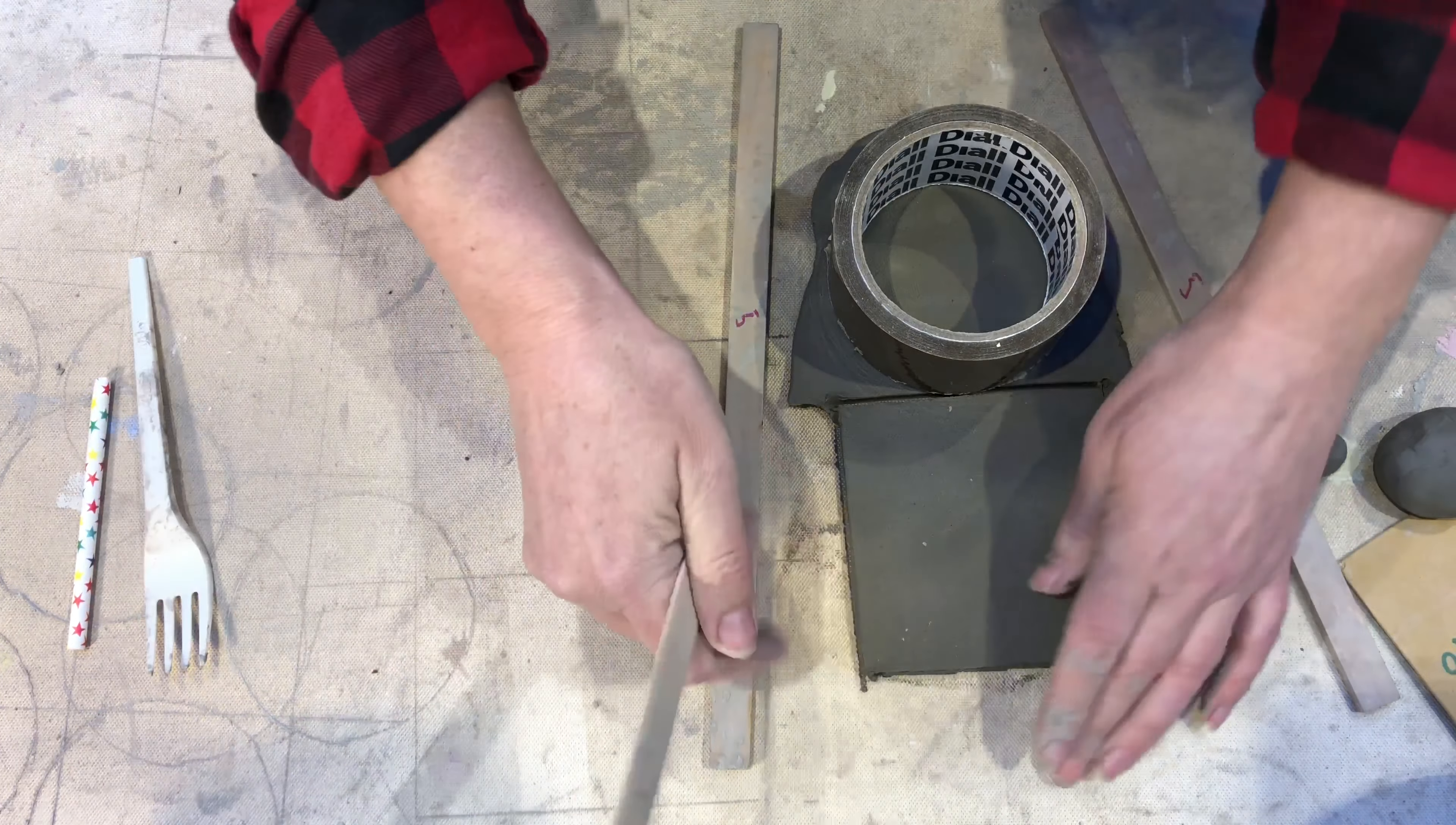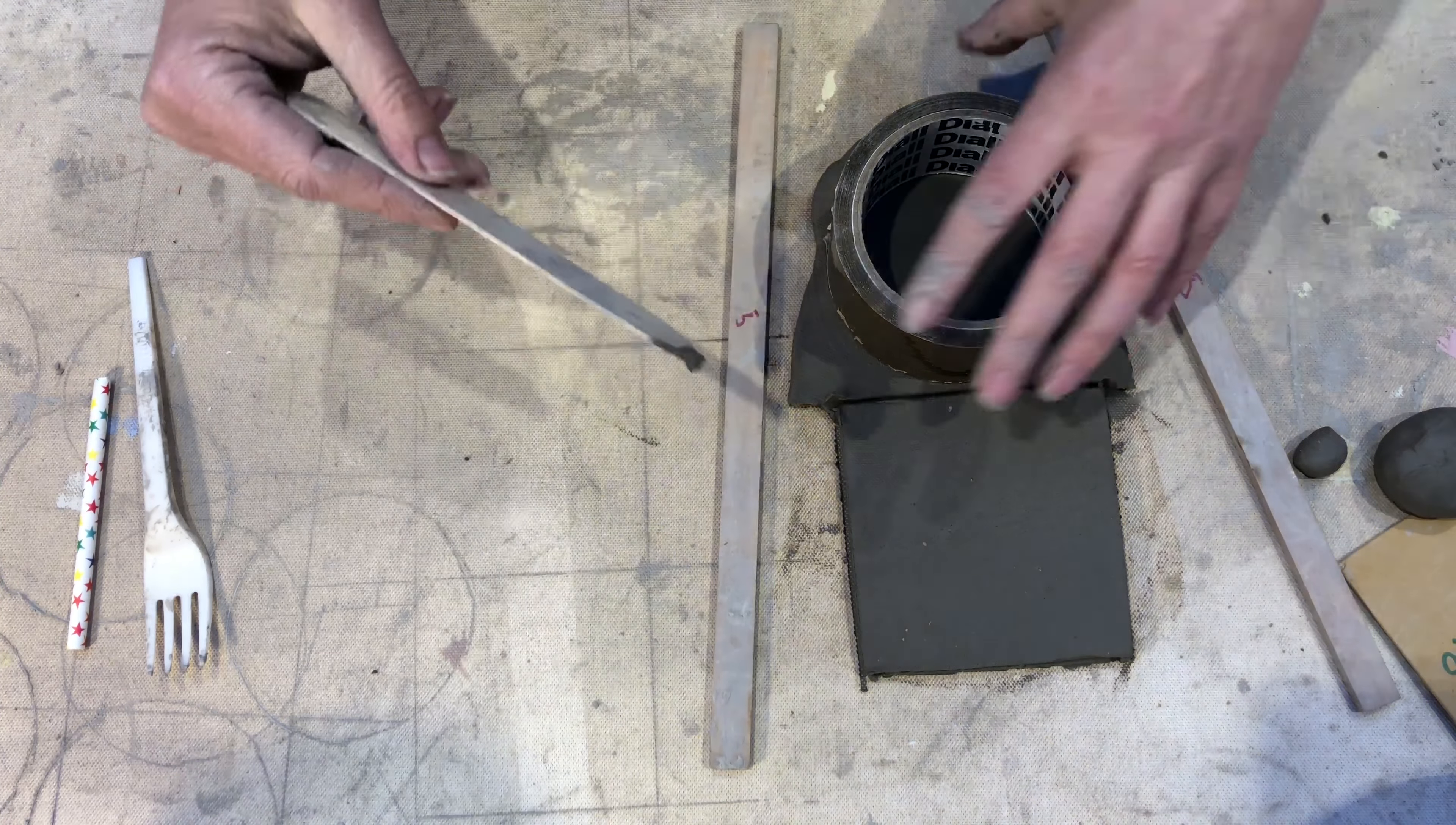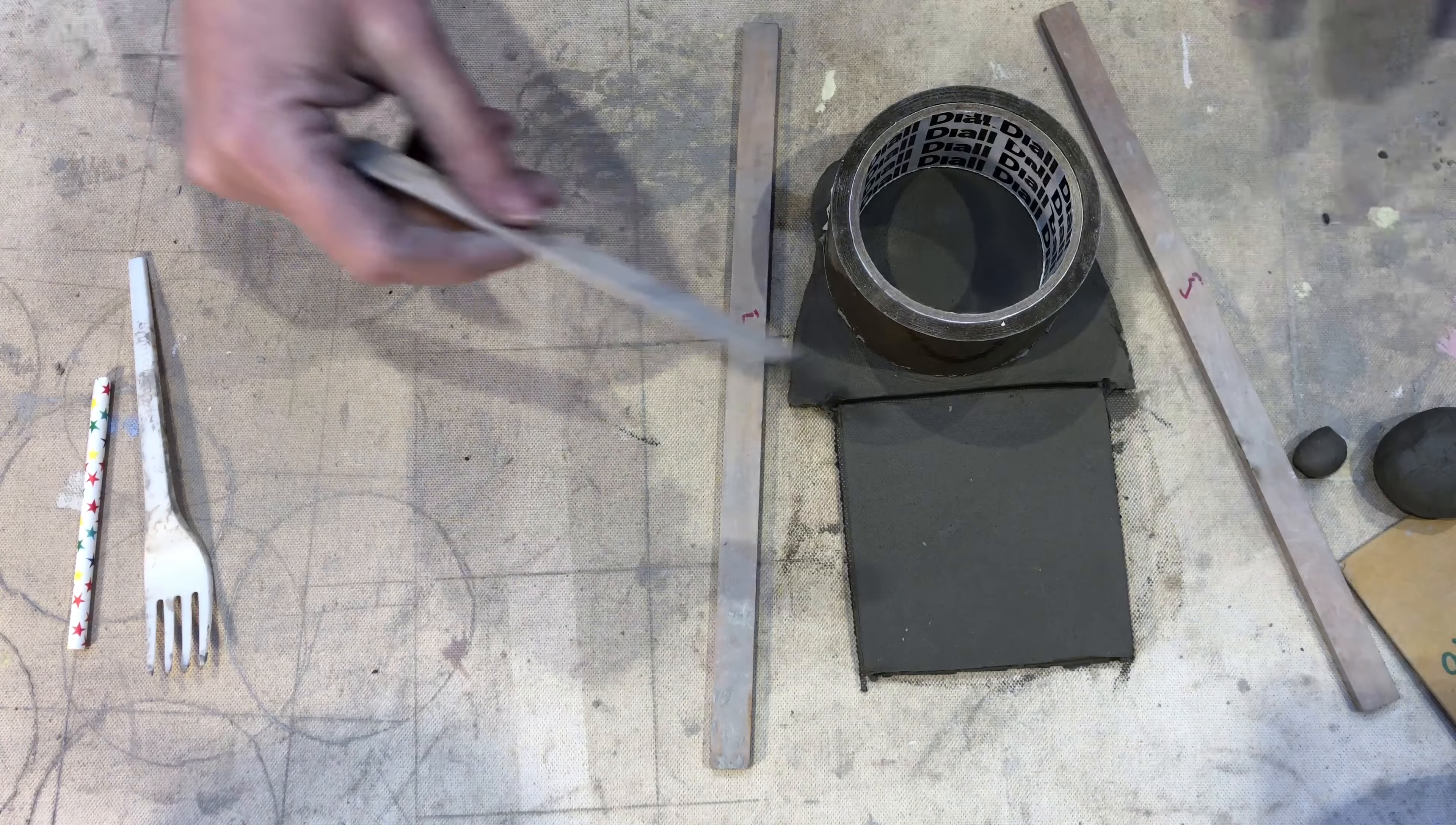With this circular one I'm going to use it as a soap dish, so I'm going to be putting holes in it later on. And the square one will be simply a trinket dish.